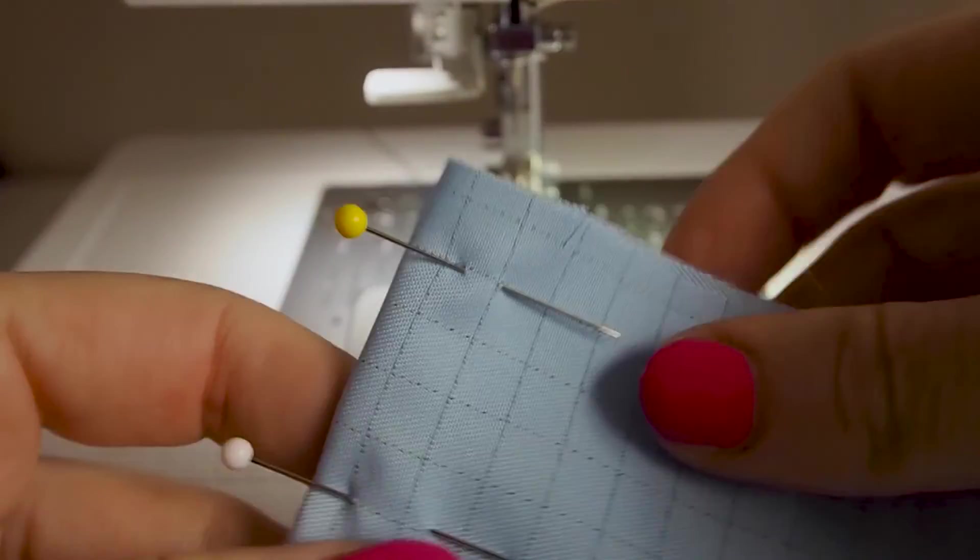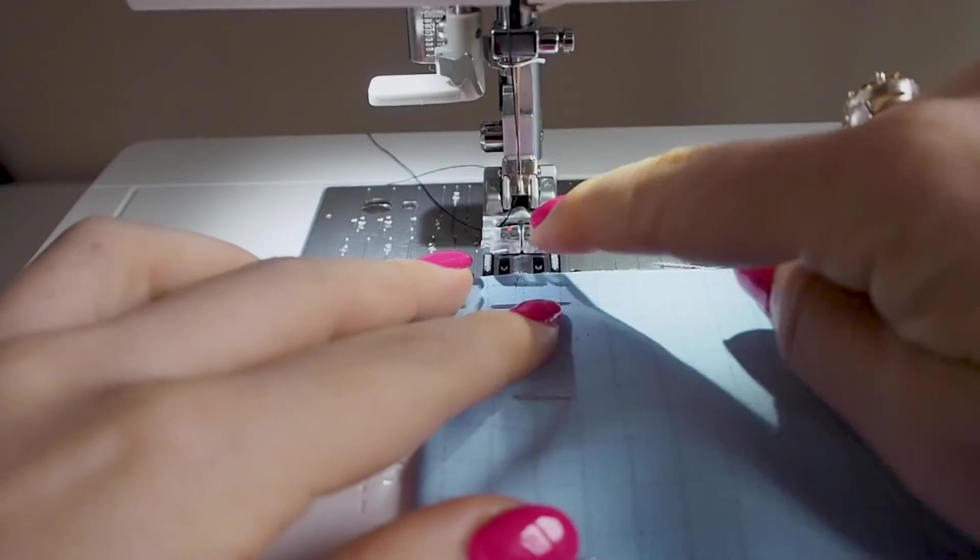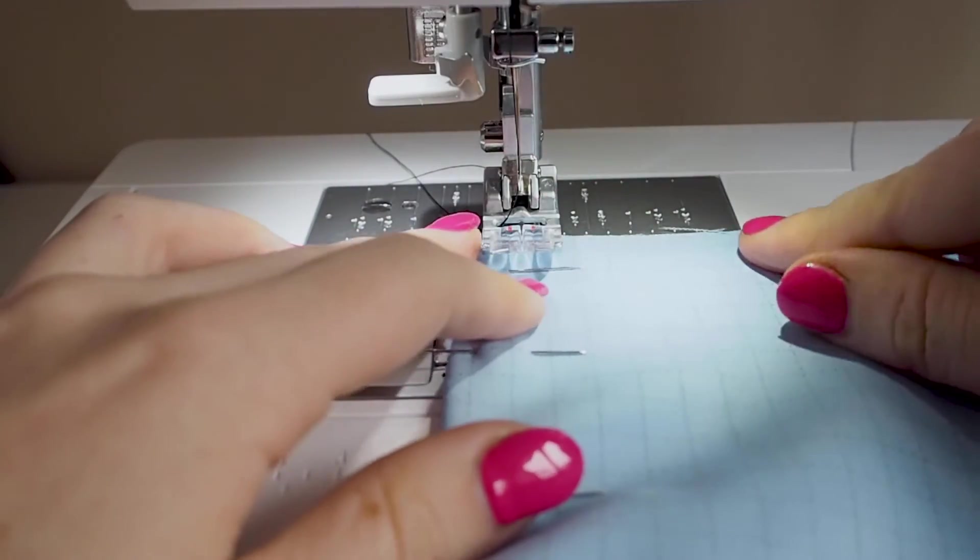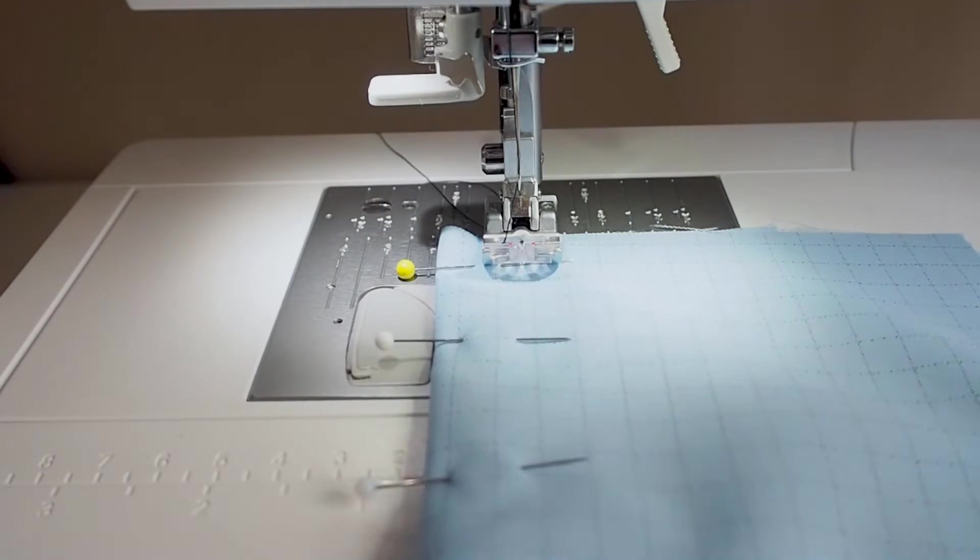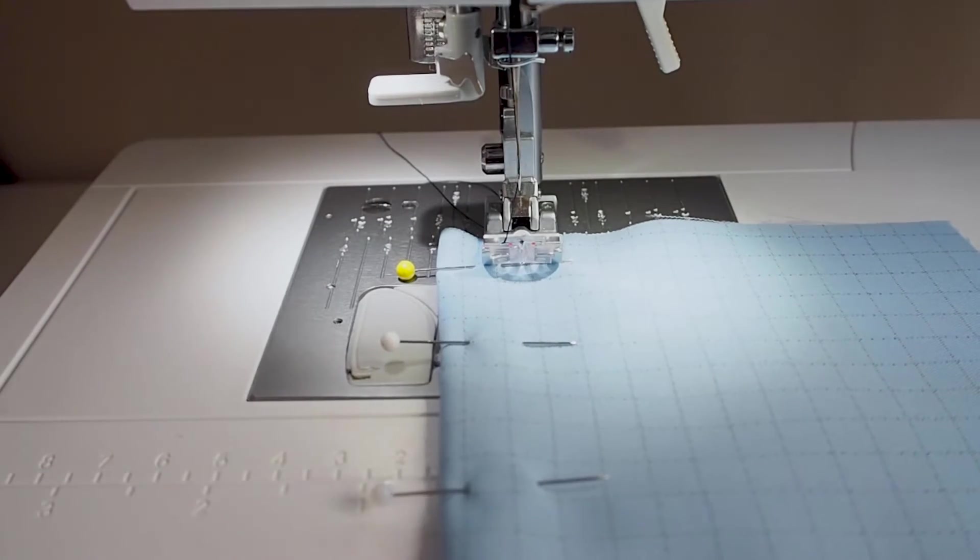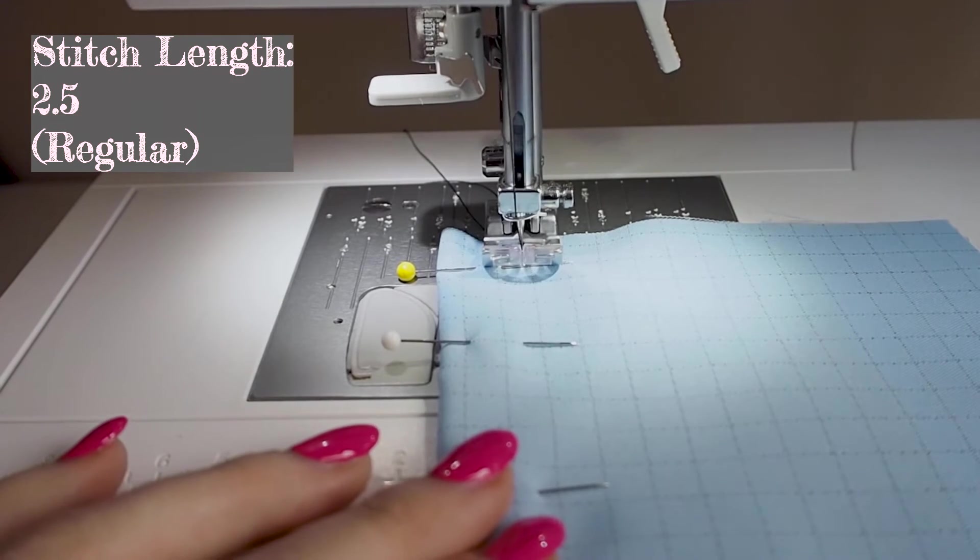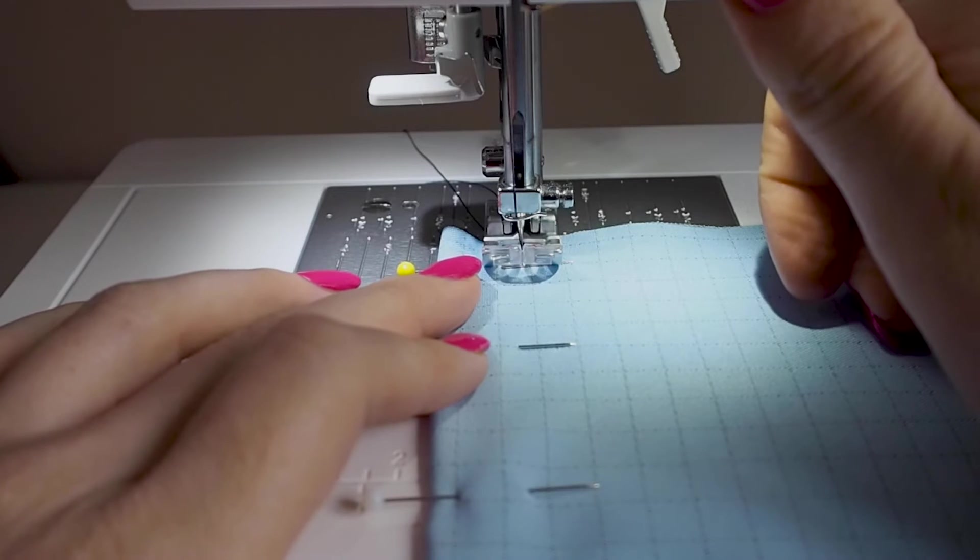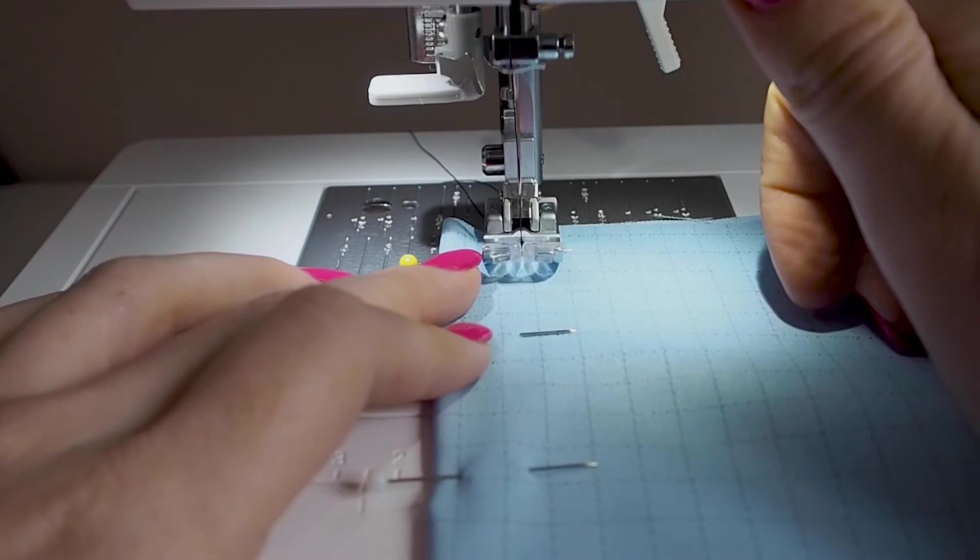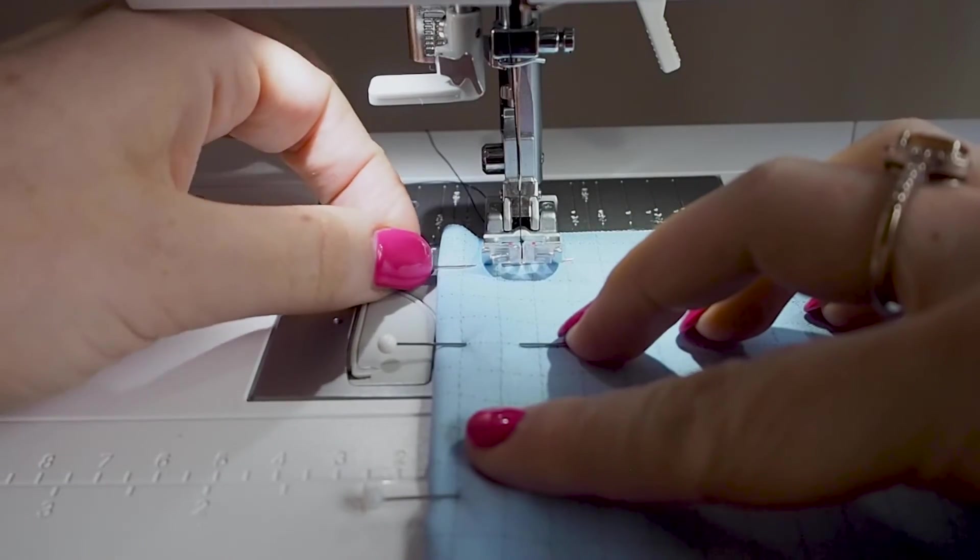At your machine, align the needle with your notch. Lower your presser foot and your needle. Remember your stitch length is your regular stitch now, in my case 2.5. Backstitch to secure to begin and angle your fabric so it's going to go in a straight line to your dart point or the thread at the edge. Slowly sew towards the point, removing the pins as you go.